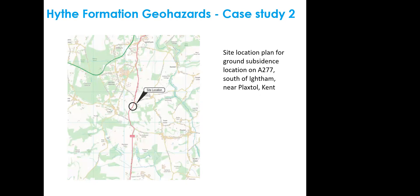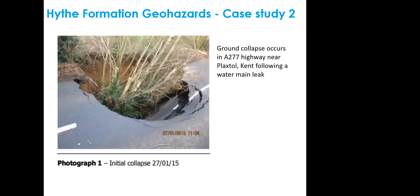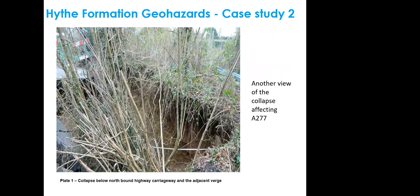Case Study 2 involves a ground subsidence event affecting the A277 road south of Ightham near Plaxtol, Kent, in January 2015 — again following a water main leak. The collapse was a fairly significant hole taking out more than a single carriageway. Seen from the other side, vegetation and trees had slid into the hole, indicating a sizeable mass of moving ground.